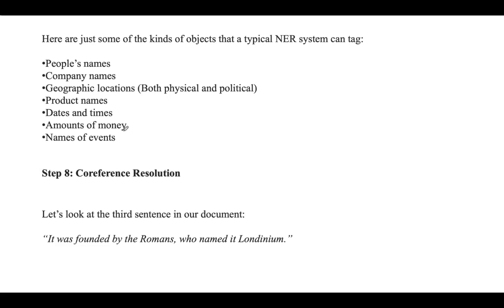For example, if you take the sentence 'It was founded by the Romans who named it Londinium' — if we pass this through our NLP pipeline, we'll know it was founded by Romans, but it's much more useful to know that London was founded by Romans. As humans we can figure out that 'it' means London. The main goal of co-reference resolution is to figure out that same mapping by tracking pronouns across sentences.